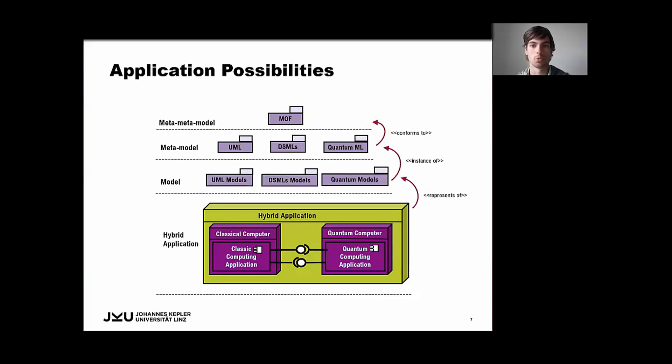And an example here would be a DSML that serves to ease the design of particular quantum algorithms. And the construction of DSML starts with the definition of the metamodel in order to capture the domain-specific concepts and their properties.